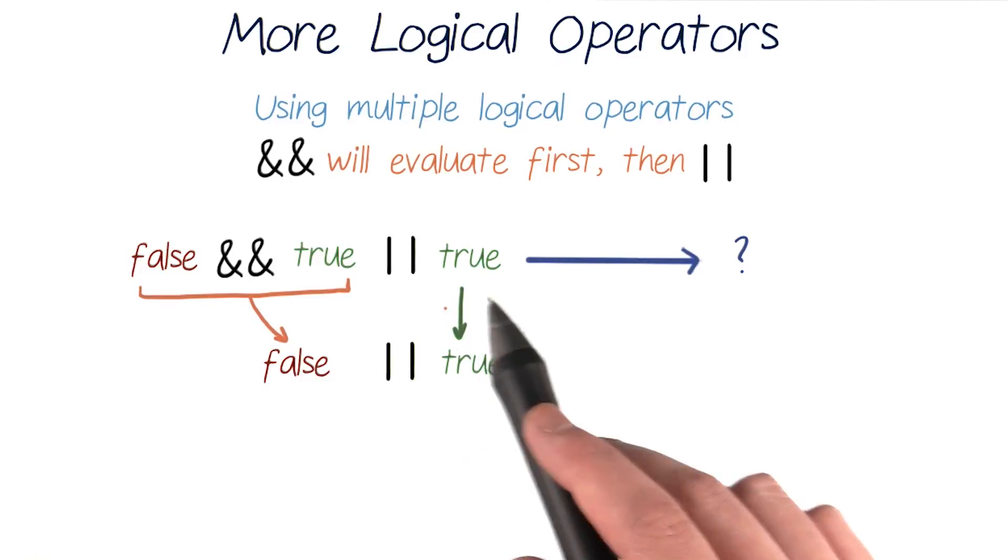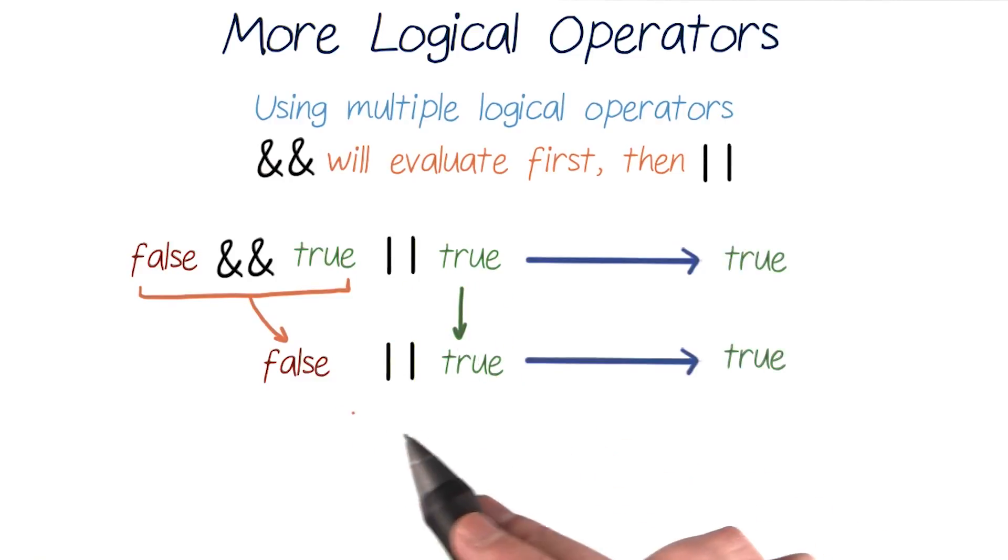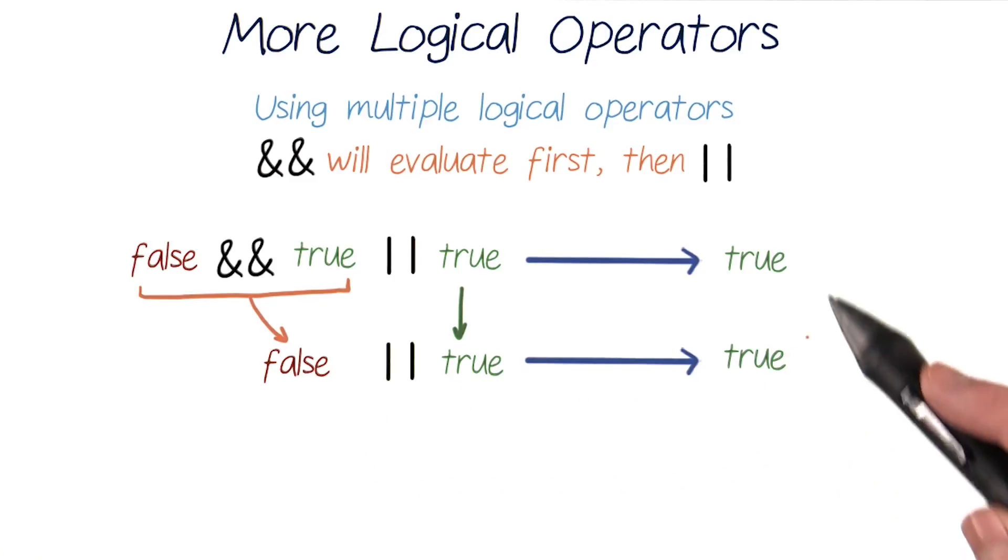And what remains is a simplified version of our first expression, false or true. We know that an or only needs one of its combined conditions to be true to evaluate to true. So this whole expression evaluates to true. And remember these two are equivalent, so our first larger expression also evaluates to true.